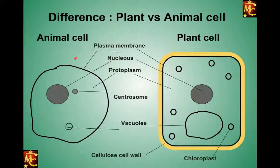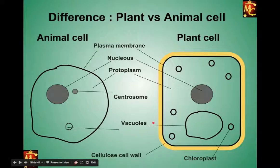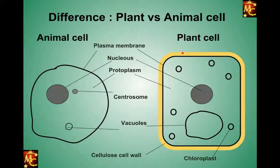Both cells have a plasma membrane. In plants, there is another membrane above the plasma membrane — a very strong wall made from cellulose and hemicellulose. In animal cells, there is only the plasma membrane with no other cover or structure above it. This additional plant structure is called the cell wall, and it protects plants from external stresses, environmental stimuli, and infection.